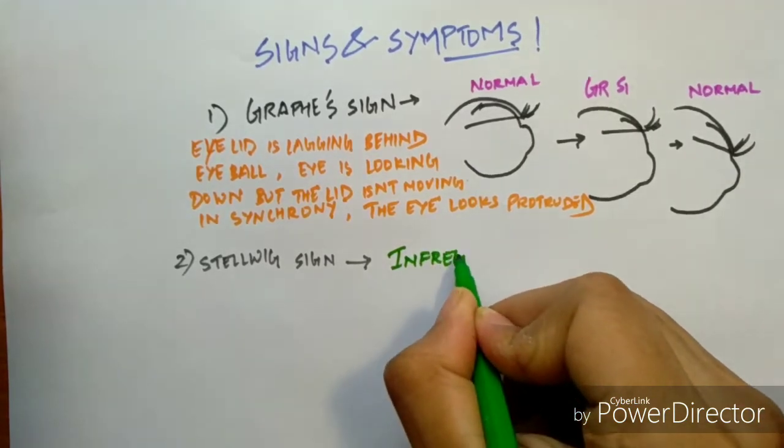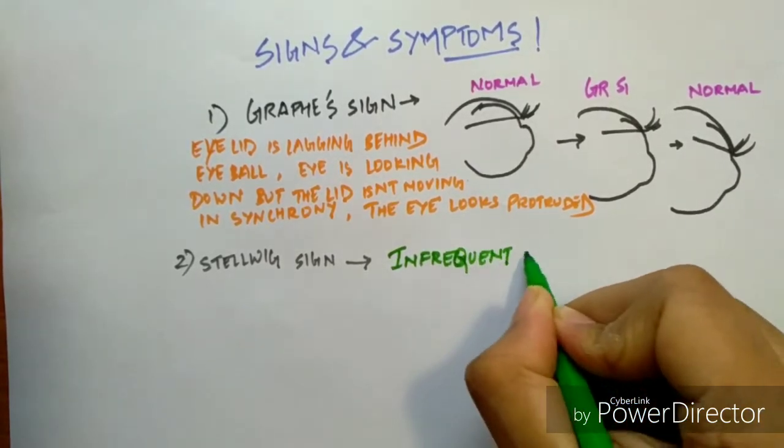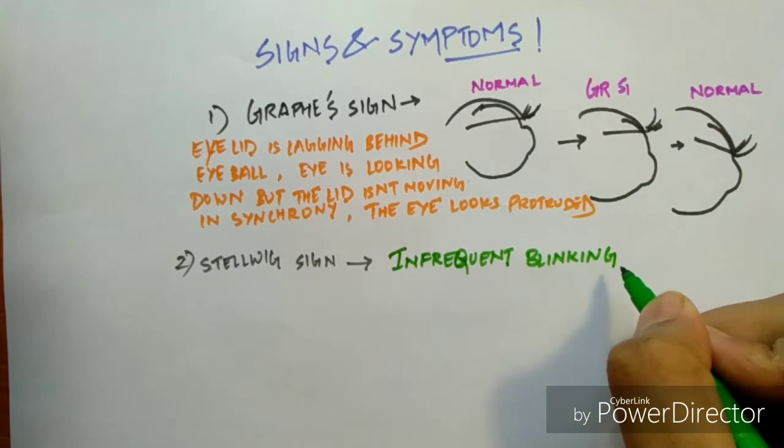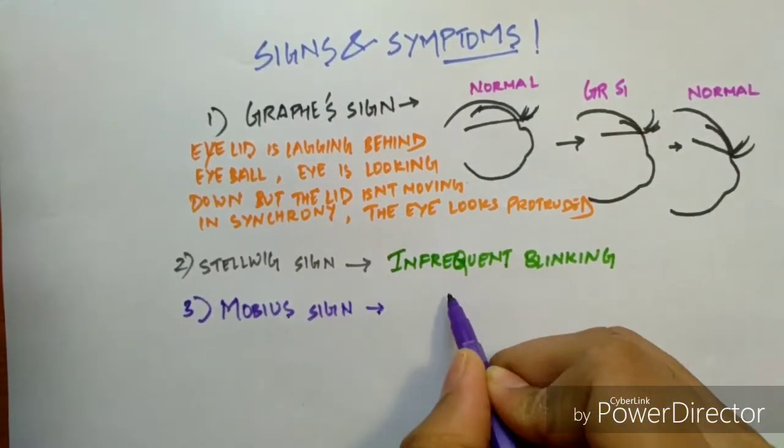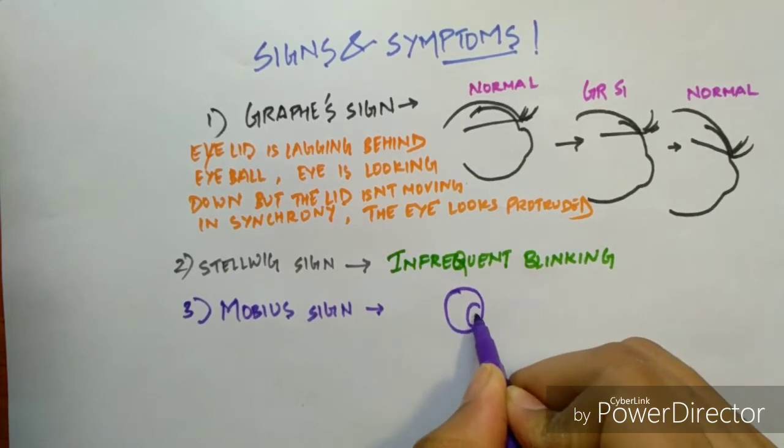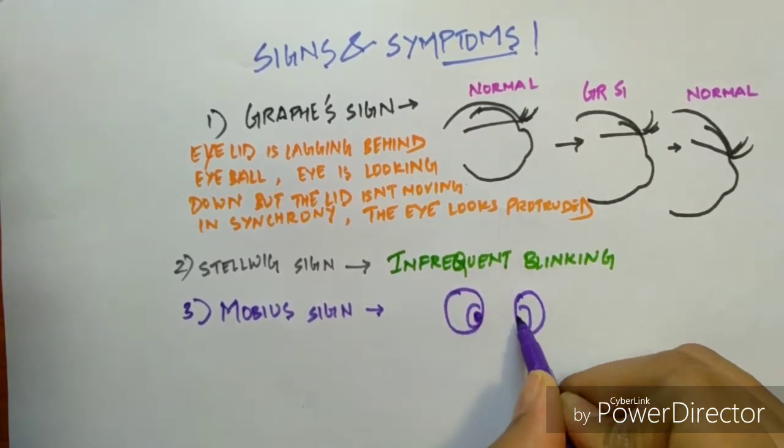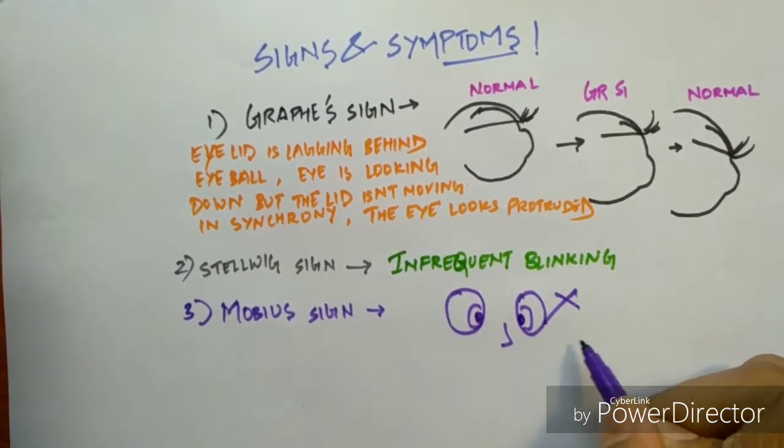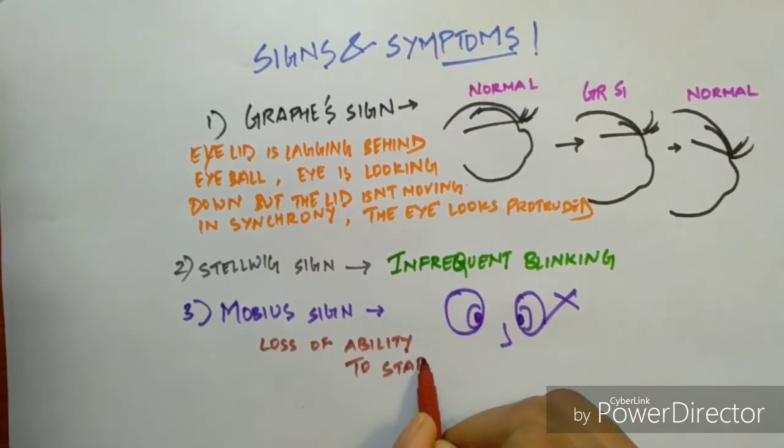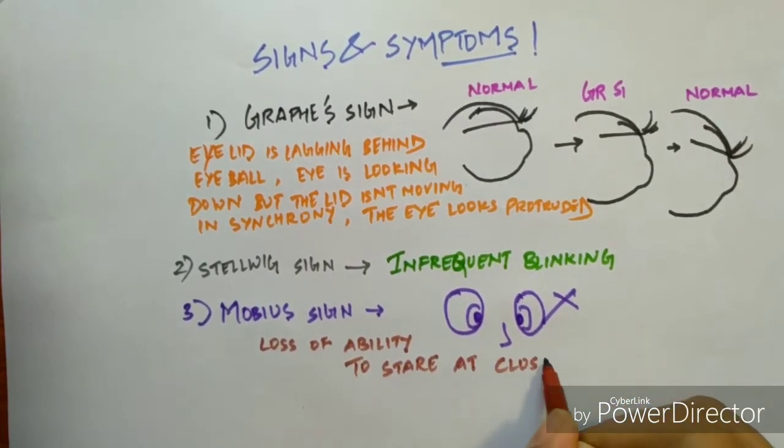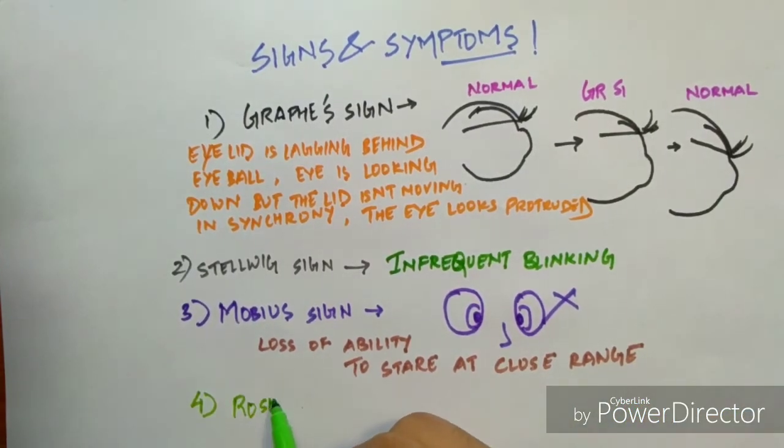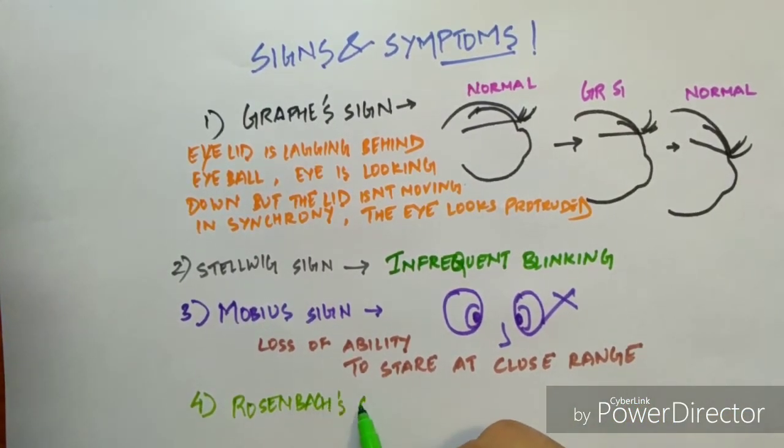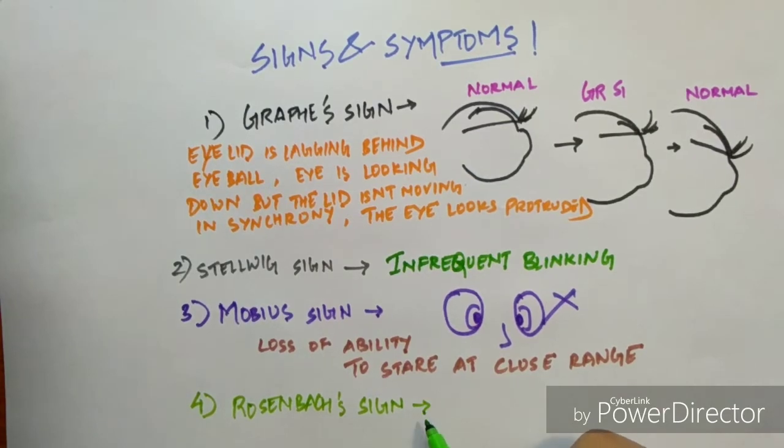Third is Moebius sign. Basically, we can say that the patient can't see his nose. That is, he has loss of ability to stare at close range. And fourth is the Rosenbach sign, in which there are tremors in the eyelid.